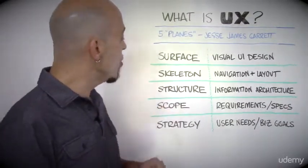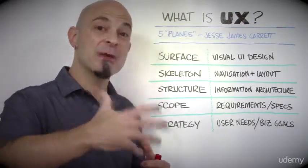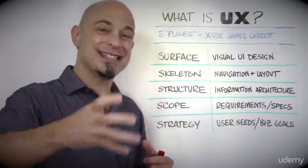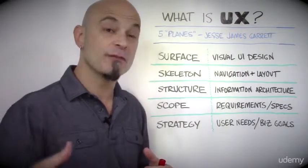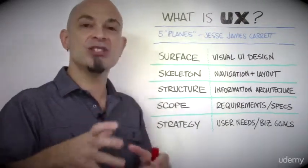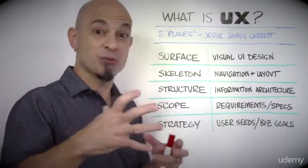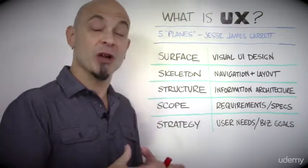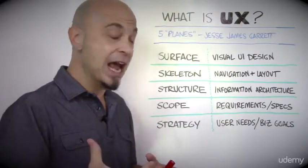From there, you go to skeleton, which is where we're thinking about navigation — how do people move through all this stuff, and how is it segregated into screens or workflows? We look at the layout of each individual screen, figuring out how much will fit on one screen and how much should be on one screen. Wireframing happens here.